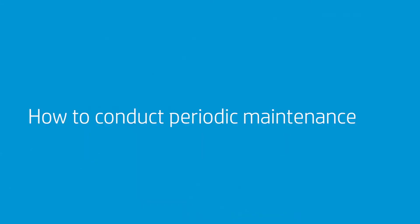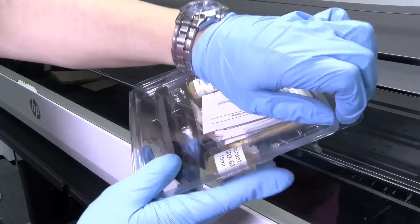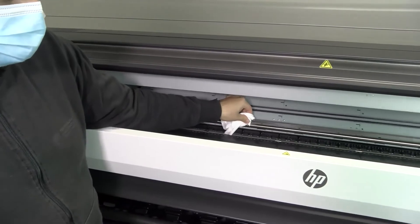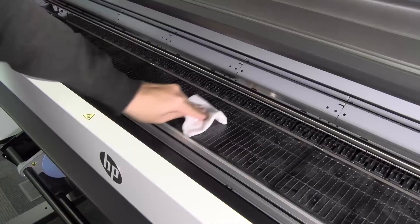How to conduct periodic maintenance. From time to time you will need to do the periodic maintenance your printer needs. This periodic user maintenance consists of three steps: one, cleaning the encoder; two, lubricating the carriage rod; and three, cleaning the platen.